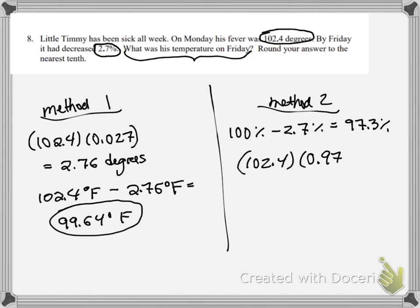So arguably a faster way to do this is to say his new temperature is 97.3% of what it was before. And when you do that, you also get 99.64 degrees.